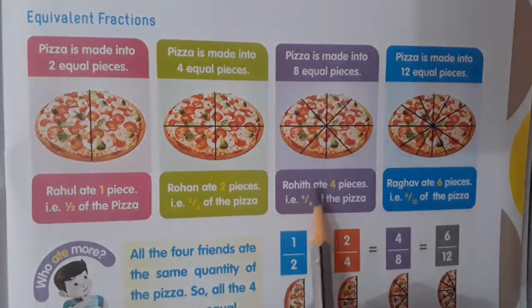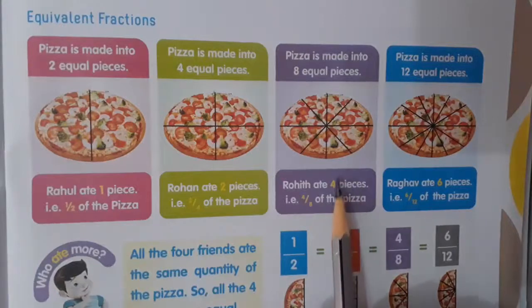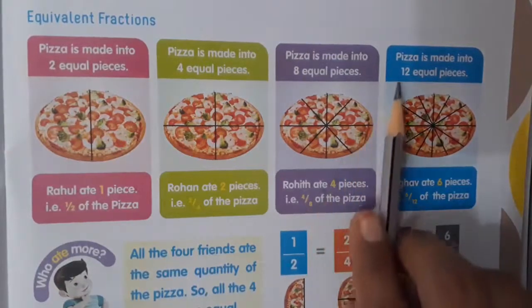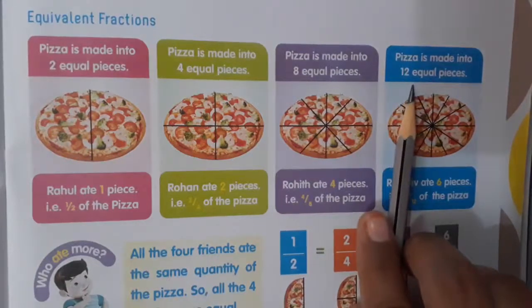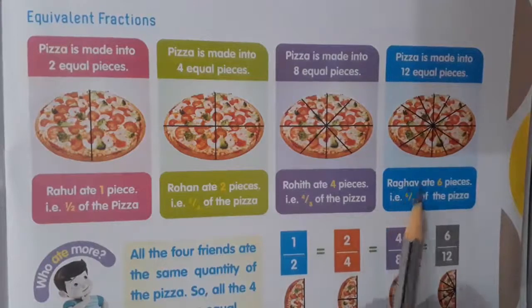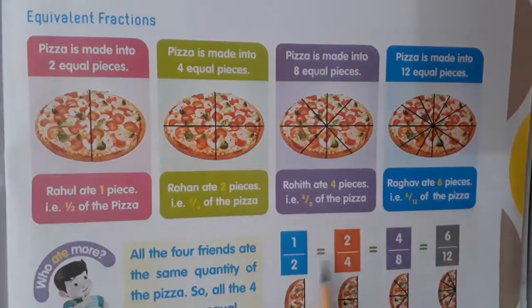The next pizza is made into 8 equal pieces. Rohit ate 4 pieces, meaning 4 by 8 of the pizza. The next pizza is made into 12 equal pieces.